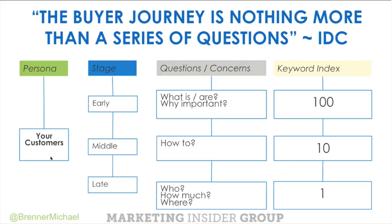The buyer journey is nothing more than a series of questions. If you simply define the questions your customers are asking at each stage of the buyer journey, then you can define a content marketing plan. It's really important to understand that there are a hundred more people asking 'What is your product category? Why is your product category important?' than asking 'How do I become good at solving a certain kind of problem in your product category?' And for every ten of those, there's only one person asking 'Who sells it, how much is it, and where can I find more information?' Think about the volume of content you create today — are you delivering a hundred times more pieces of content in the early stage than in the late stage?